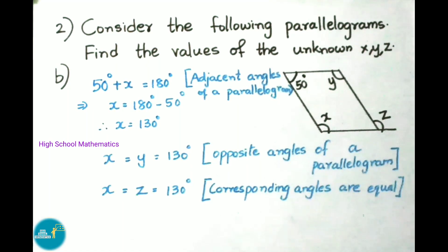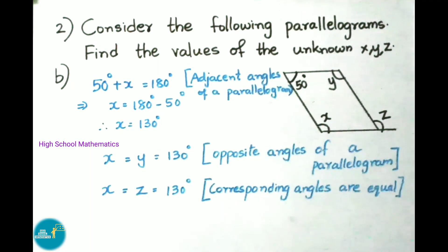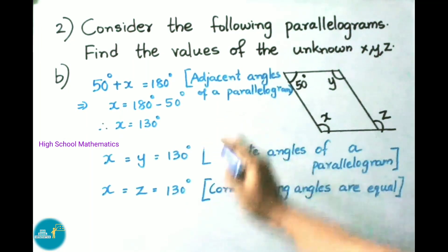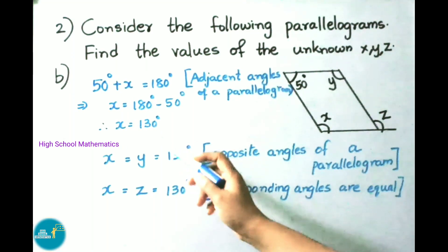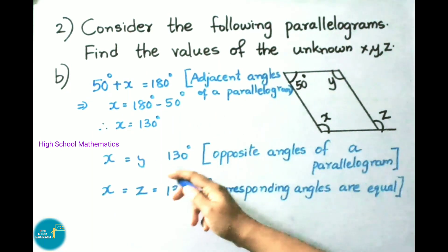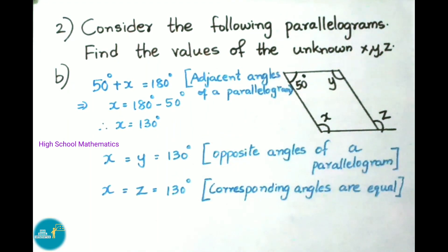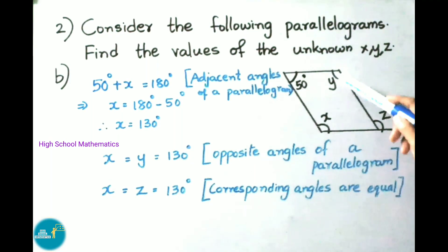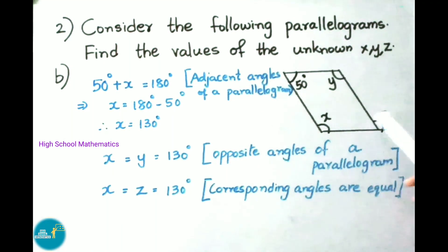Question B — here they have given a parallelogram with one angle as 50°. We need to find X, Y and Z. So 50° plus X equals 180°, because the sum of adjacent angles of a parallelogram is 180°. Therefore X equals 180 minus 50 equals 130°. X equals Y equals 130° because opposite angles of a parallelogram are equal. X equals Z equals 130° because corresponding angles are equal. Therefore X is 130°, Y is 130°, and Z is 130°.